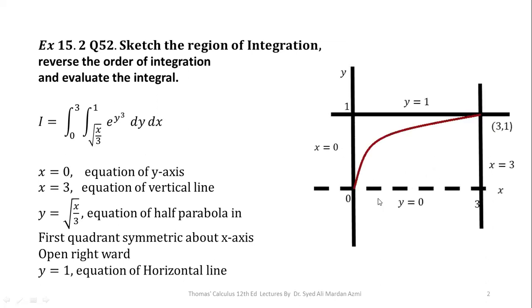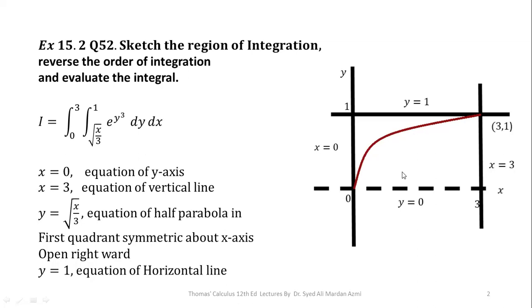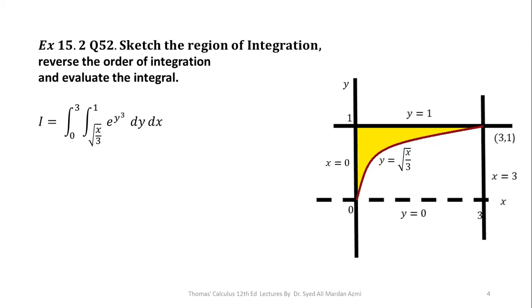In the next step, we have plotted the half parabola in the first quadrant, this one. And then we will highlight our region of integration. After highlighting our region of integration, we will move on the next phase, which is the reversal of order.